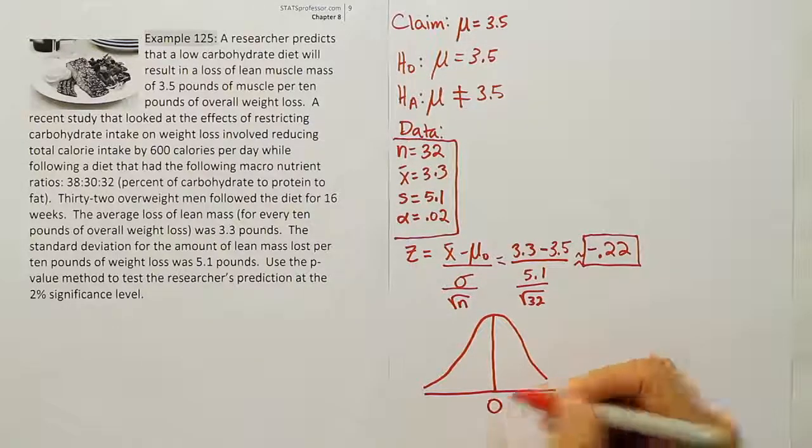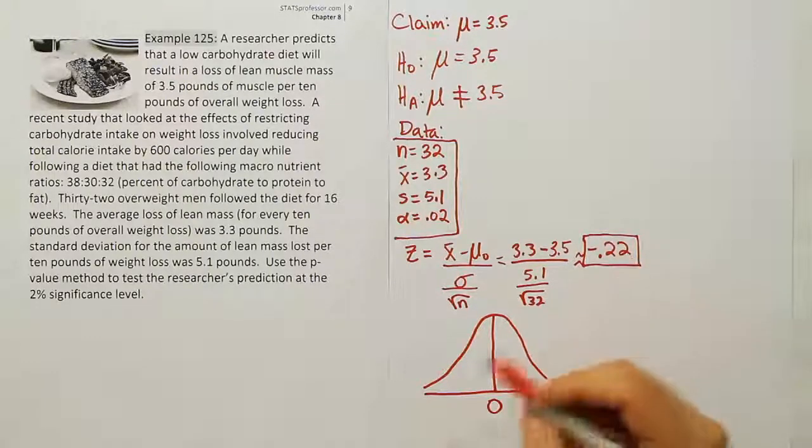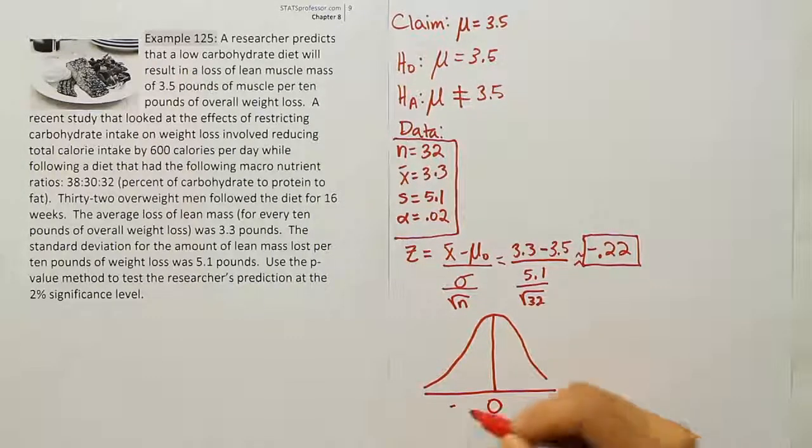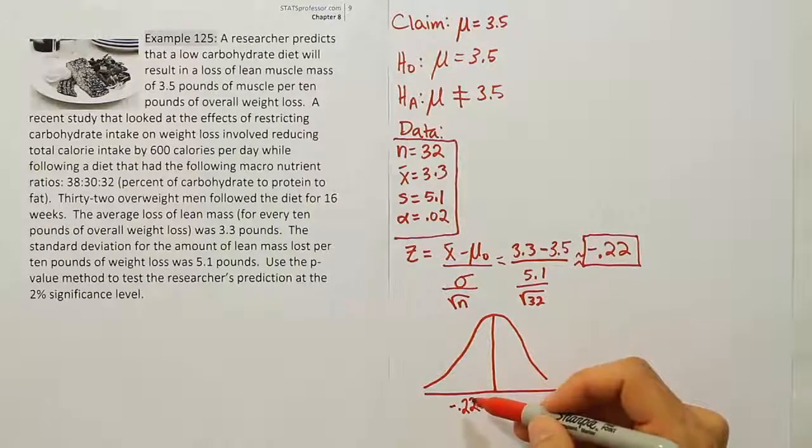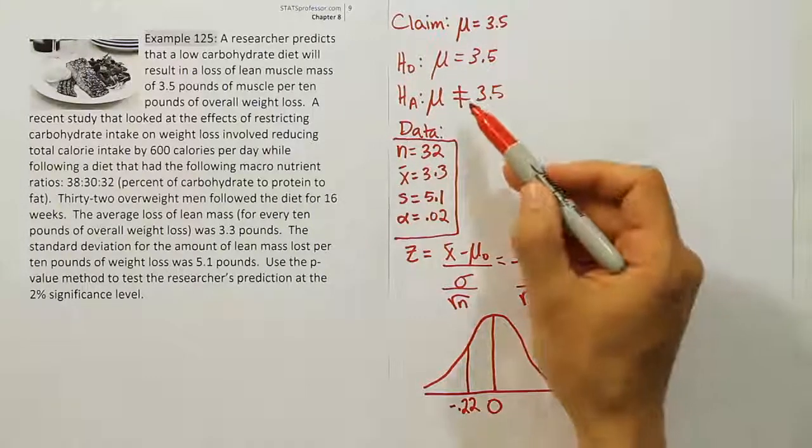For a two-tailed test, the way to calculate the p-value is to look at your test stat and plot it on the curve where it belongs. Since 0 is at the center, -0.22 would be just a little to the left of that.